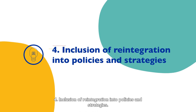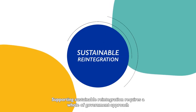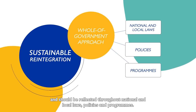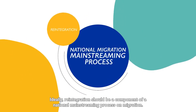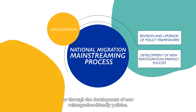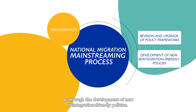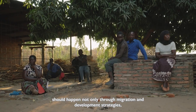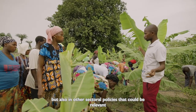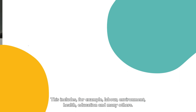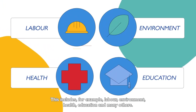Inclusion of reintegration into policies and strategies. Supporting sustainable reintegration requires a whole-of-government approach and should be reflected throughout national and local laws, policies and programmes. Ideally, reintegration should be a component of a national mainstreaming process on migration. This can be achieved through the revision and upgrade of policy frameworks or through the development of new reintegration-friendly policies. The inclusion of reintegration considerations should happen not only through migration and development strategies, but also in other sectoral policies relevant for the national governance of return and reintegration — including, for example, labour, environment, health, education, and many others.